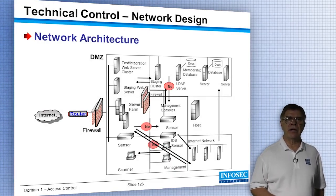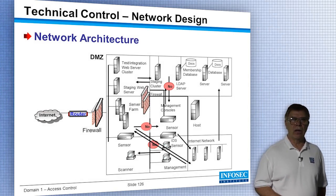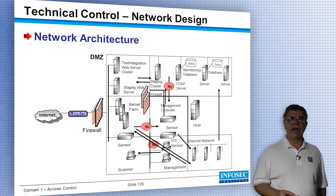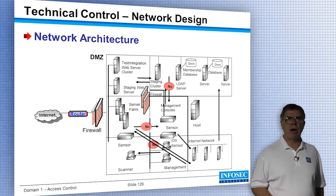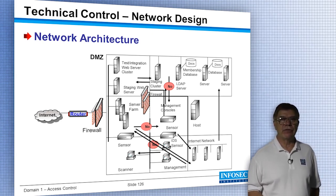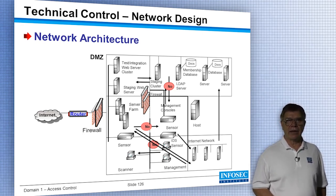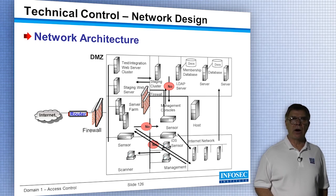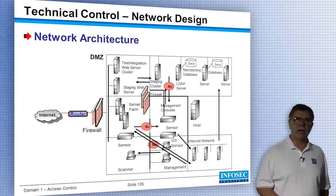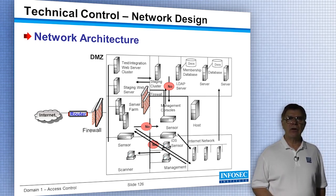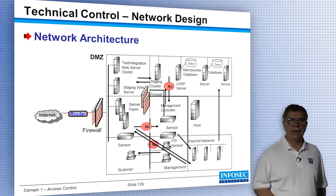Looking at network architecture as access control: where you place firewalls matters. You may have an internal network with a firewall in front of top-secret data to block access. You architect the network to control access. Put a DMZ in place with your bastion hosts — servers hardened with extra services and ports removed — with a firewall in front of and after the DMZ. How you architect the network controls who has access and who can get in.